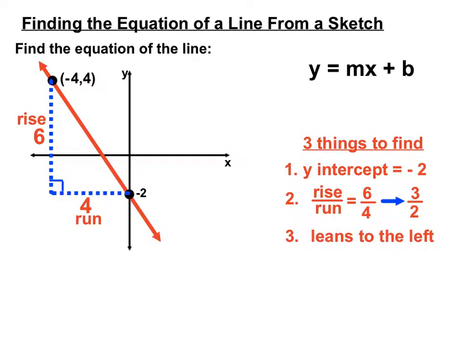Our last piece of information is that this line leans to the left. You would have remembered, hopefully, that when a line leans to the left, the gradient section of our y equals mx plus b should be negative. So our m-value will be negative.